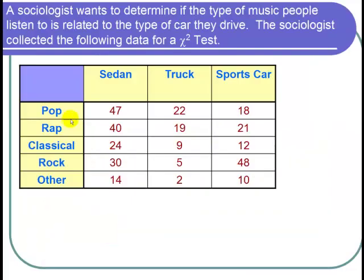The following table presents the results of the survey. Here's a table, we have pop, rap, classical, rock, and other. And then we have sedan, truck, and sports car for the type of car. These numbers tell you how many of each cell there were. For example, there were 19 truck owners who listened to rap music.